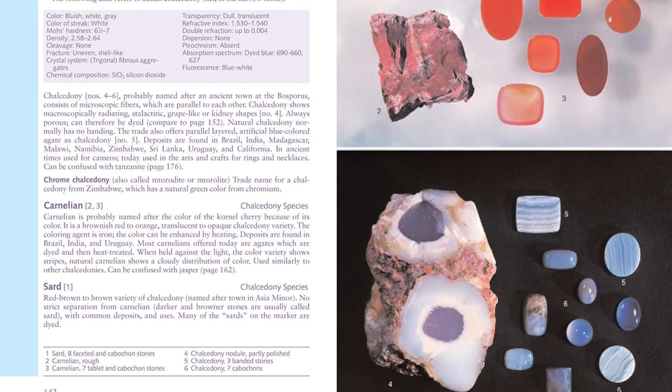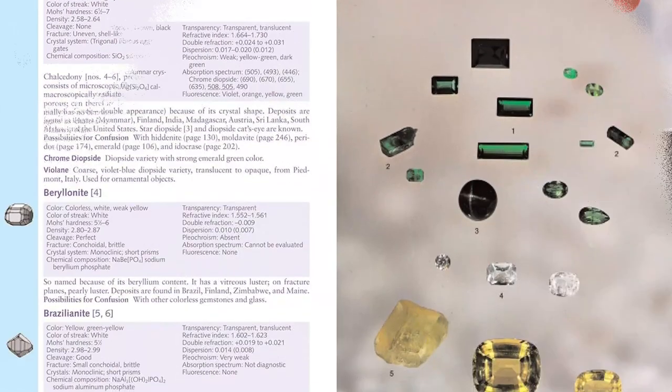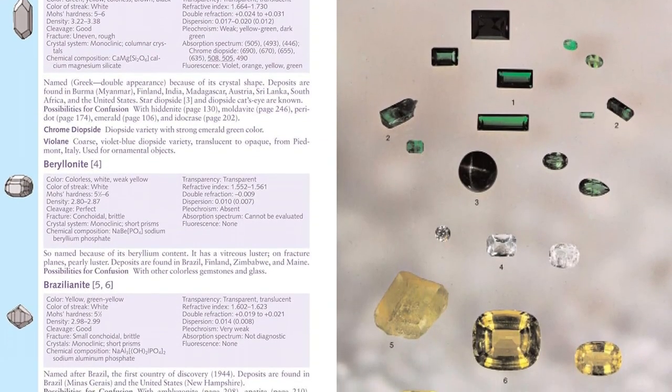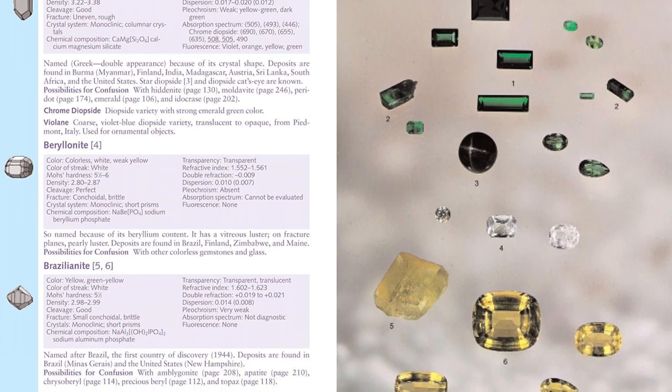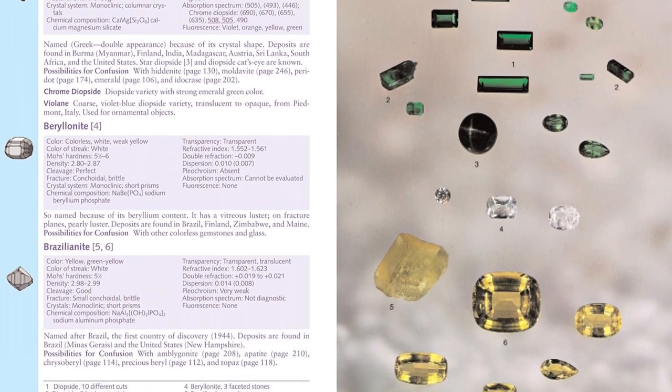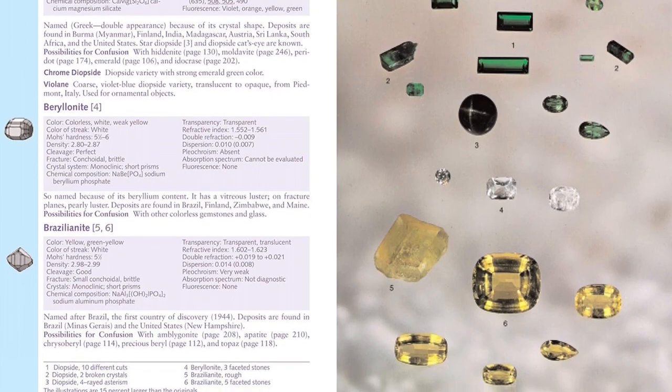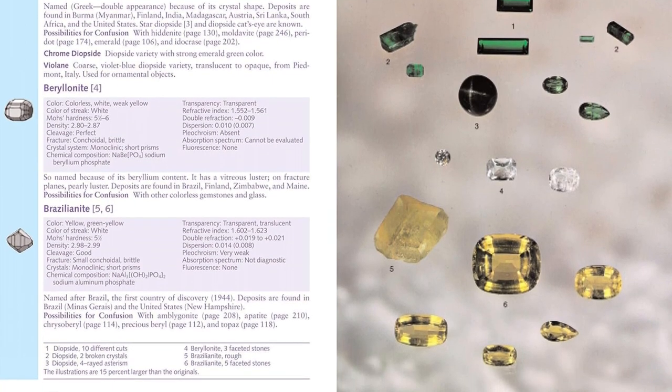Organic gem materials such as coral, ivory, amber, and pearl are also covered, along with more recently discovered stones like sharoite. Additionally, this all-inclusive rocks and minerals book includes imitations, synthetics, and combined stones.